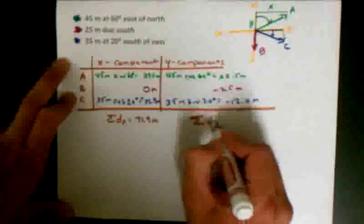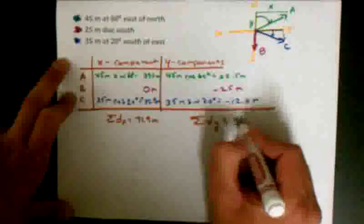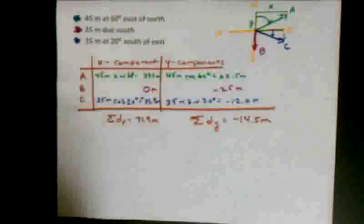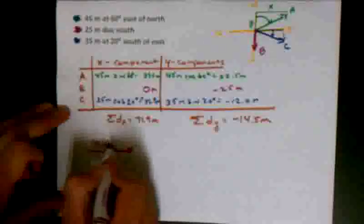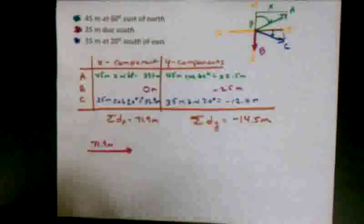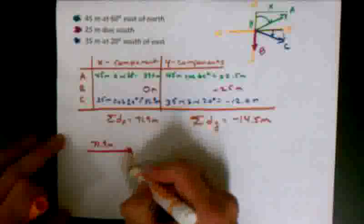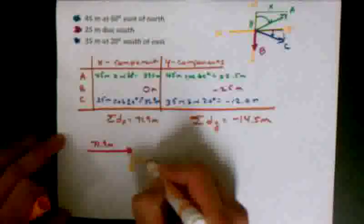Now I'm ready to add up all my components. The sum of my x components is 39 plus 32.9 gives me 71.9 meters. The sum of my y components is 22.5 minus 25 minus 12 gives me minus 14.5 meters. So my resulting vector will be 71.9 meters to the east and then 14.5 meters to the south. And so I want to find this resultant right over here.